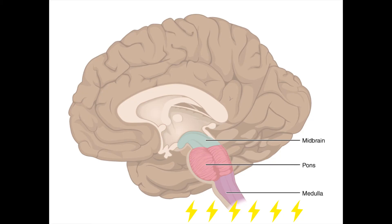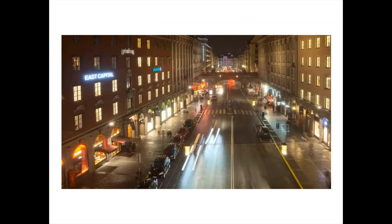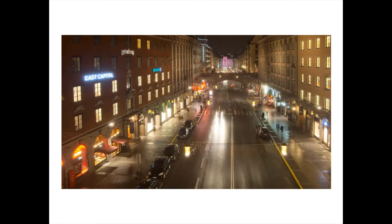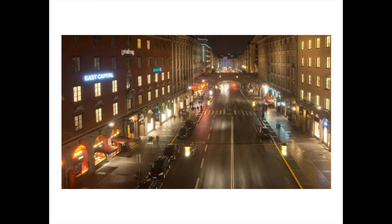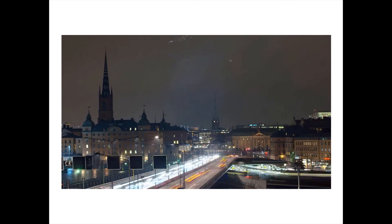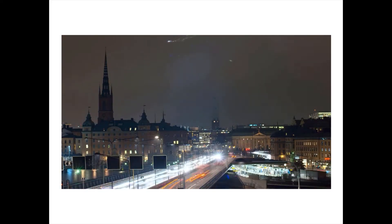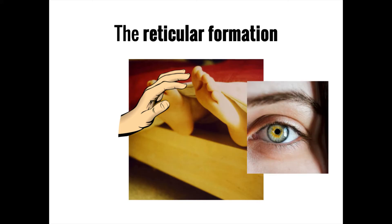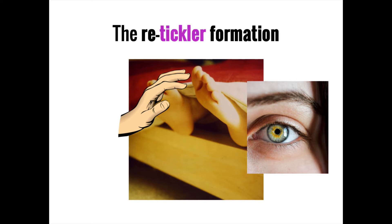The reticular formation plays a vital role in deciding which sensory signals are sent upwards to the brain for conscious processing and which are considered irrelevant and therefore ignored. For example, someone living in an apartment on a busy city street is still able to sleep through the night despite the barrage of sensory information, such as the sound of cars passing by or the brightness of street lights outside. The reticular formation filters out irrelevant stimuli, but if something unexpected happens — such as someone tickling them while asleep — it determines this isn't background noise and sends the signal into conscious awareness, waking the person up. In this way, the reticular formation governs which information is consciously processed and which is ignored.